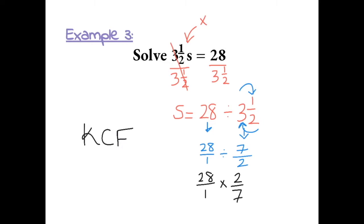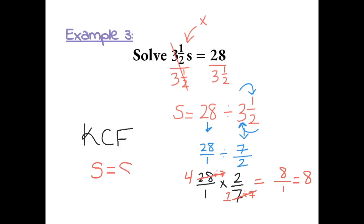Now we can multiply, but first we cross-simplify by dividing by 7: 7 divided by 7 is 1, and 28 divided by 7 is 4. Now we multiply: 4 times 2 is 8, and 1 times 1 is 1. So 8 over 1 equals 8, and the answer is s equals 8.